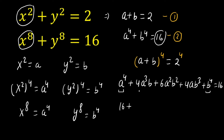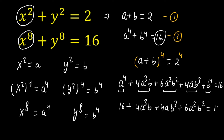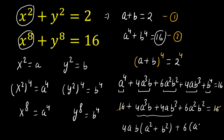So here 16 + 4a³b + 4ab³ + 6a²b² = 16. If we subtract 16 from both sides, the 16s cancel out. Then looking carefully at these terms, if we take out the common factor 4ab, we get 4ab(a² + b²) + 6(ab)² = 0.